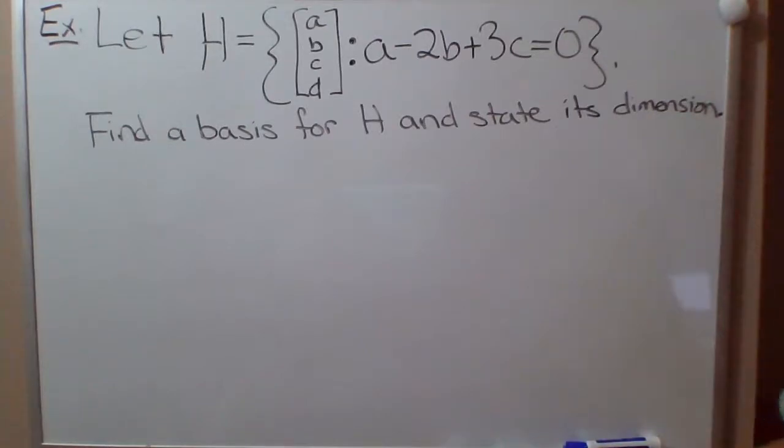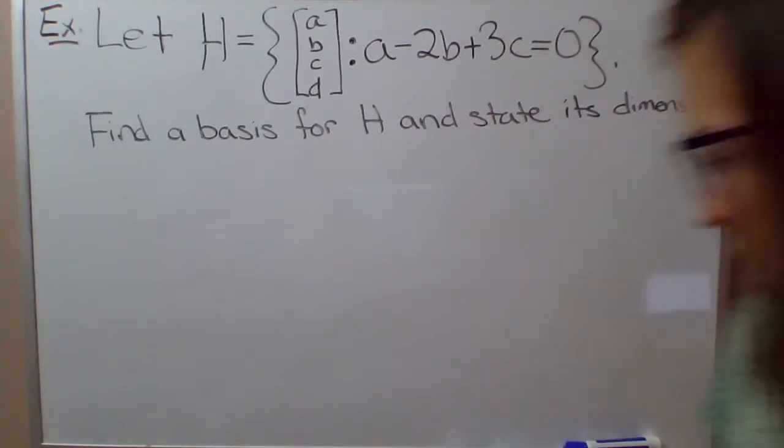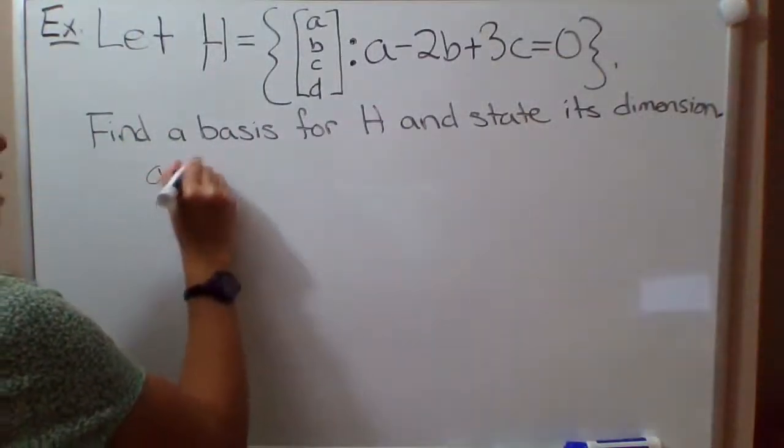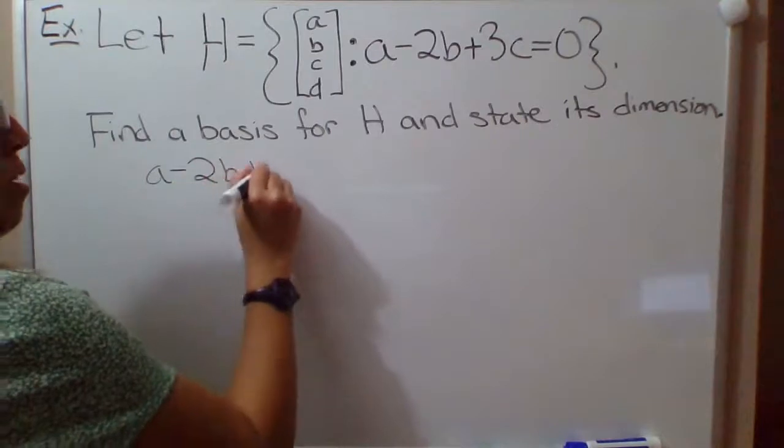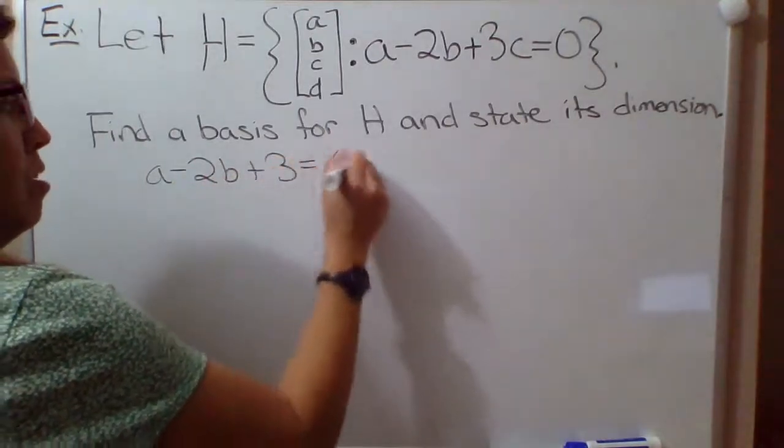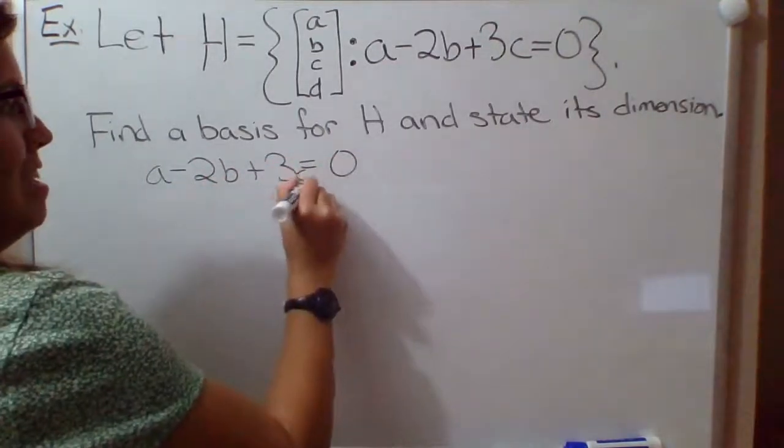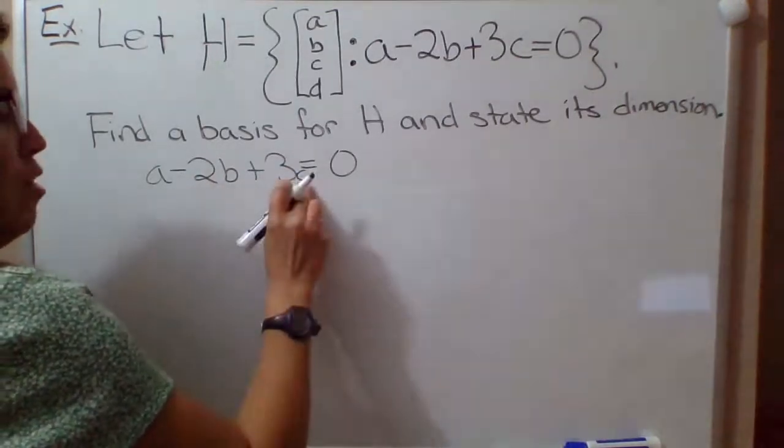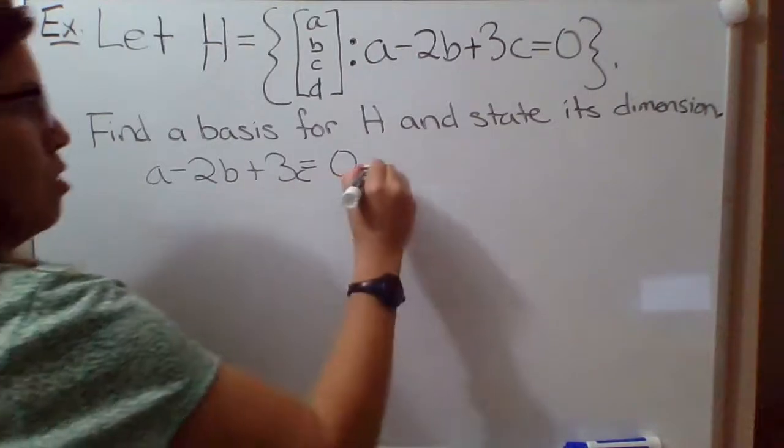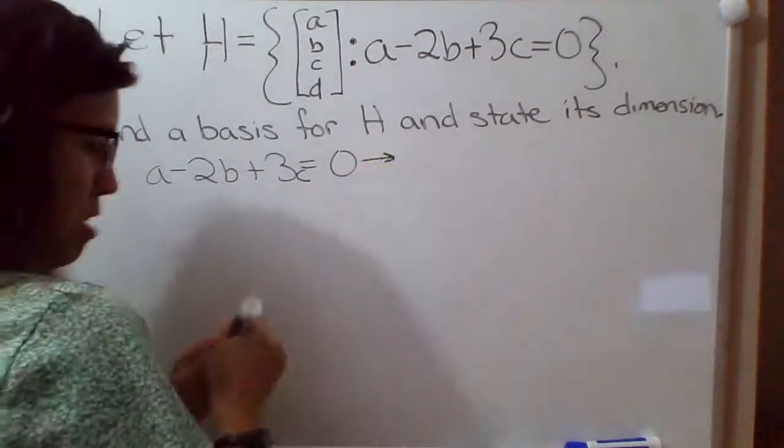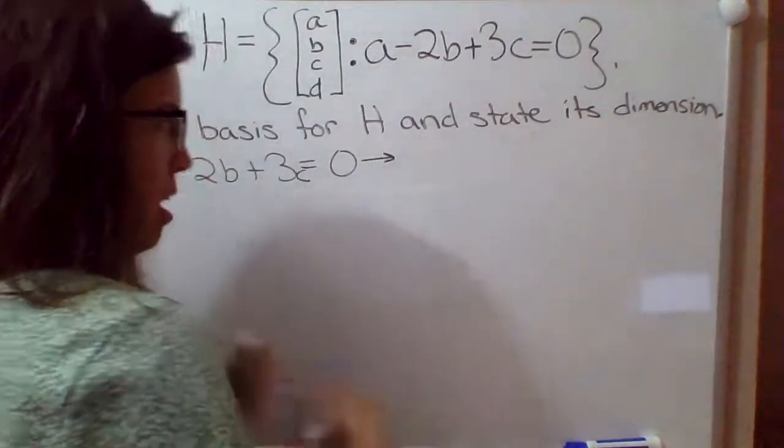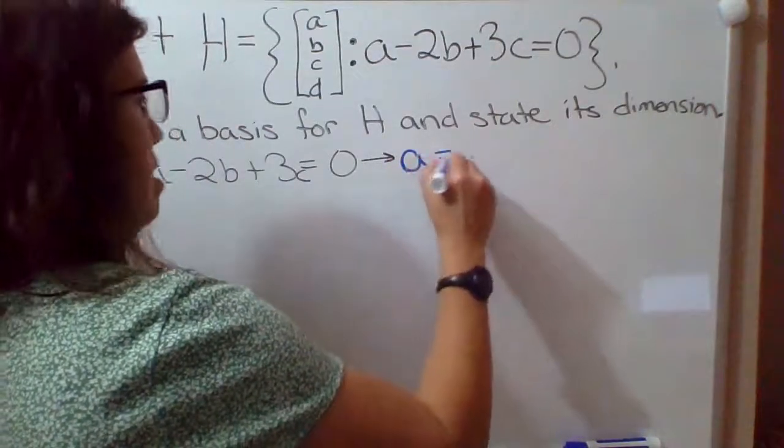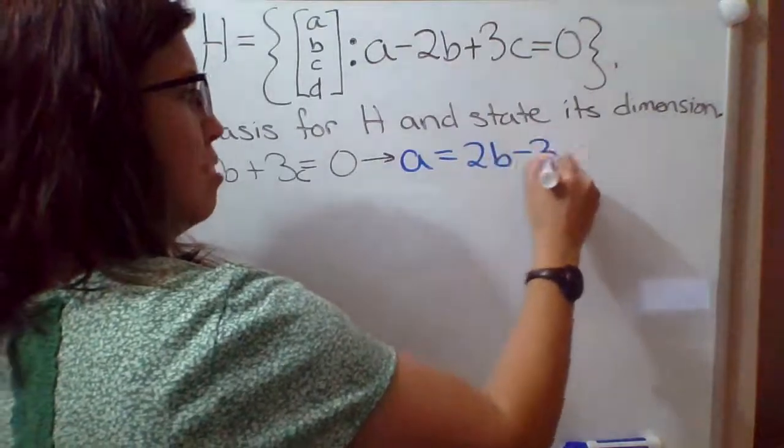So the first thing I would do here would be probably to take this equation, so A minus 2B plus 3C equals 0, and I would move the 2B and the 3C to the other side. So I would rewrite this, I'm going to use a different color here, as A equals 2B minus 3C.